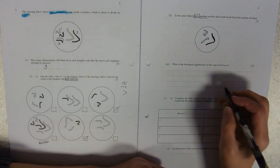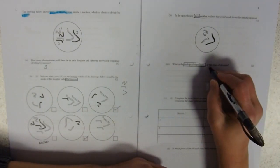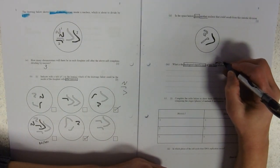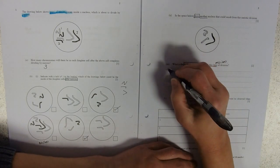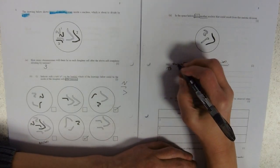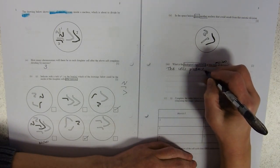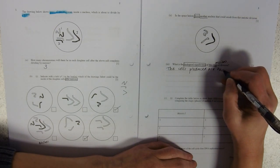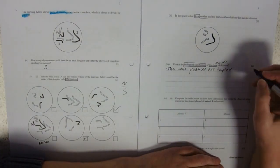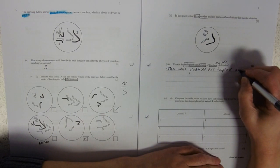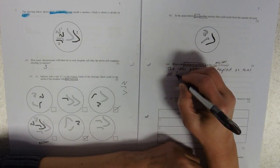So, trickier - what's the biological significance of this type of cell division? So here we're talking about meiosis. So we're talking about haploid cells. So the cells produced are haploid, and I need to talk about the significance of that. So that at fertilization...